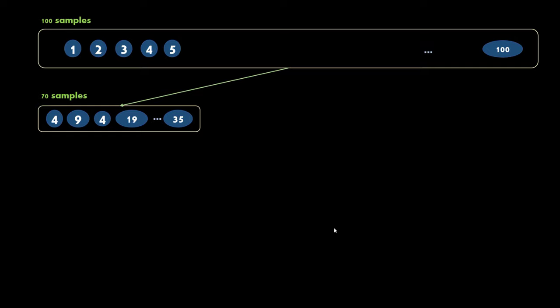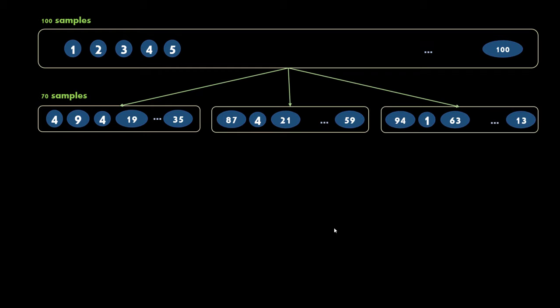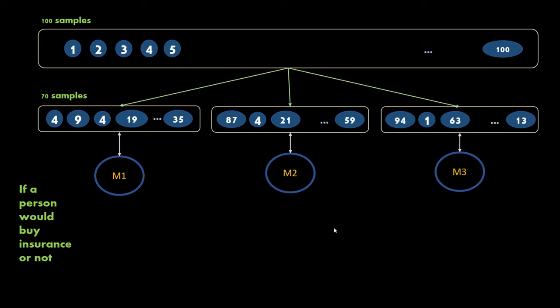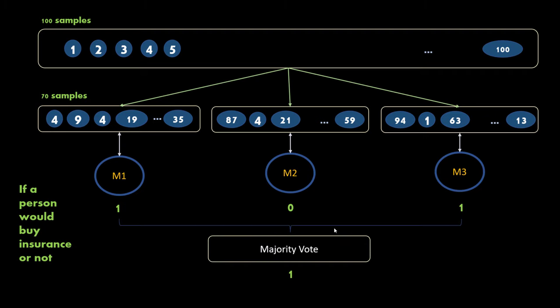From my original dataset I create n number of smaller subsets using resampling with replacement, and on each individual dataset I train a machine learning model. Let's say I'm classifying if a person should buy insurance using logistic regression. M1, M2, M3 are all logistic regression models but trained on different datasets. When I do prediction on all three in parallel and take a majority vote — M1 and M3 say buy insurance, M2 says no — majority vote gives me my final outcome.